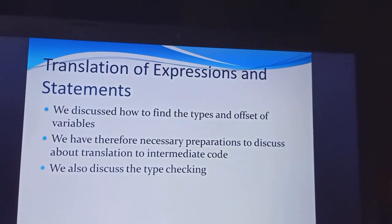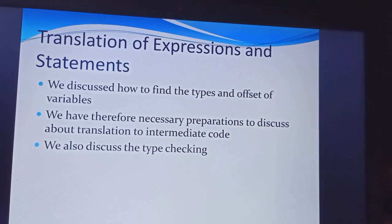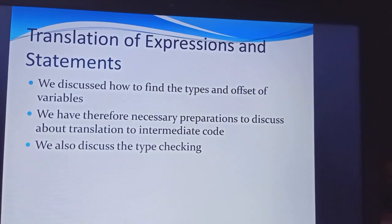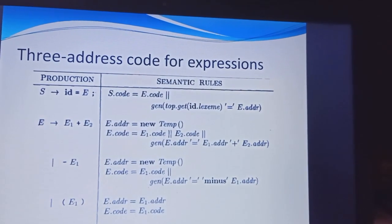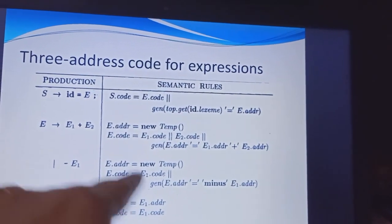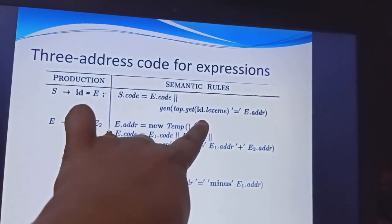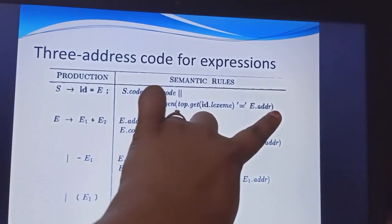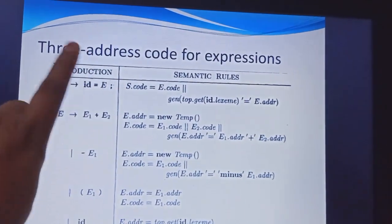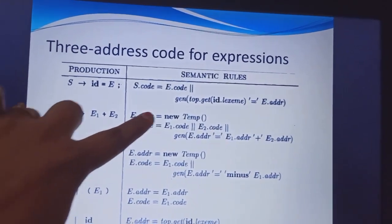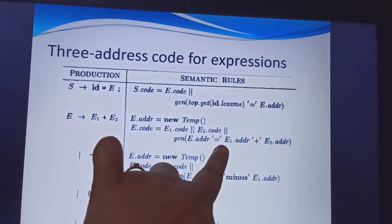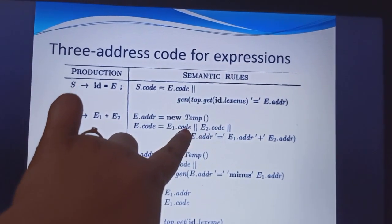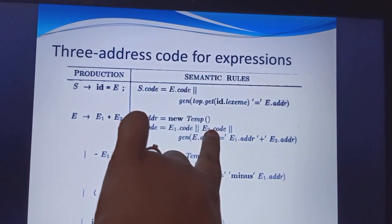Next is the translation of expressions and statements using their types and offset variables, followed by the type checking concept. The three-address code for expressions: s tends to id equal to e. We generate the id value, the lexeme value, and assign it to the e addressing value, getting e dot code to s dot code. Likewise, e tends to e1 plus e2: we generate e dot address as e1 dot address plus e2 dot address, given to e dot code, taking either e1 dot code or e2 dot code.